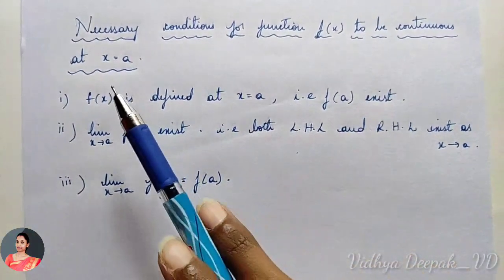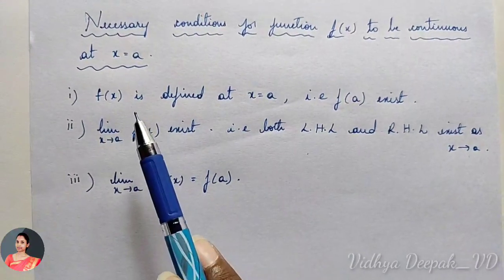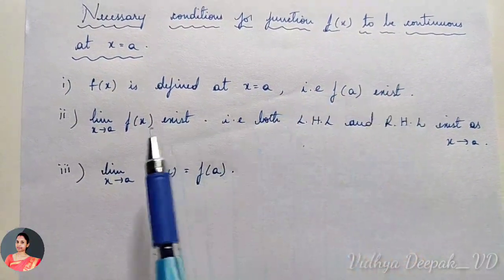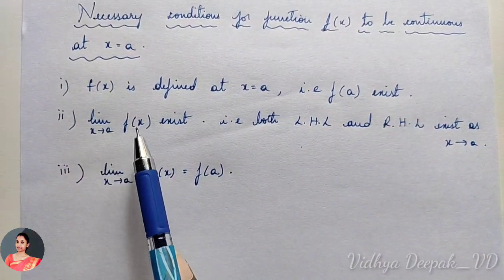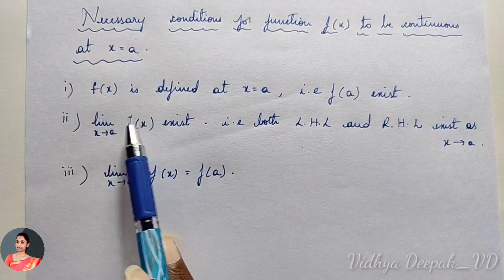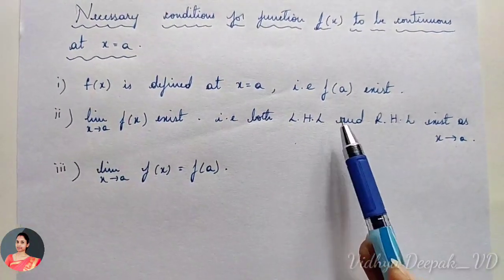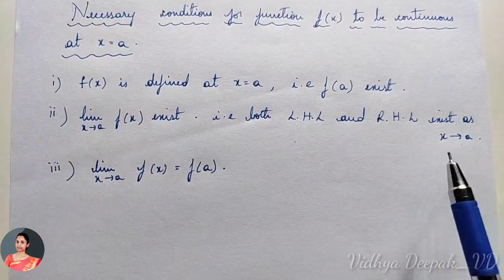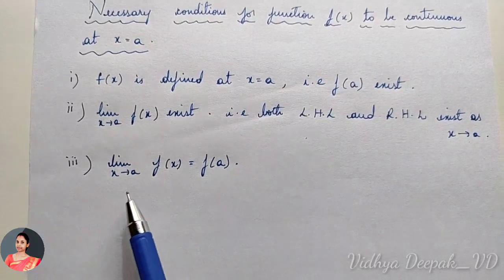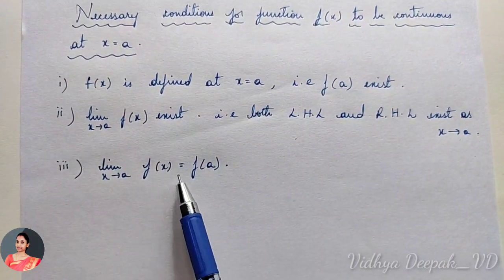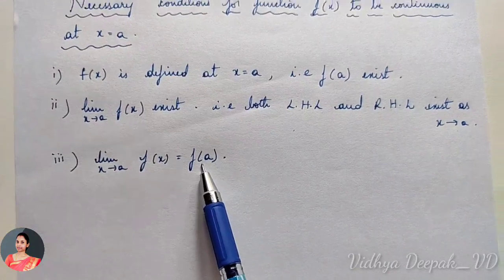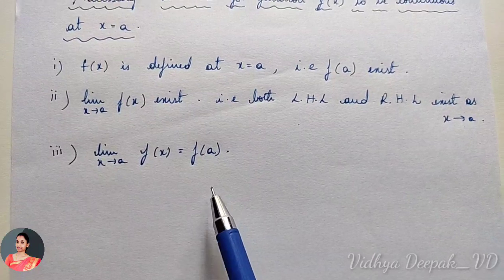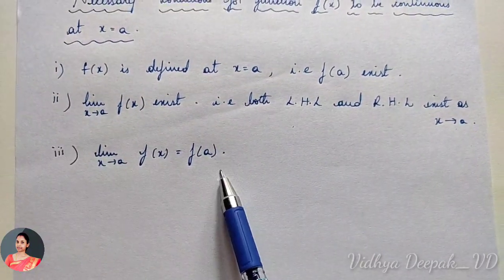The necessary conditions for f(x) to be continuous at x = a are: first, f(x) should be defined at x = a — that is, f(a) should exist. Second, the limit as x tends to a of f(x) should exist — meaning both the left-hand limit (LHL) and right-hand limit (RHL) should exist at x = a. Third, the limit as x tends to a of f(x) should be equal to f(a) — this value should equal that value.